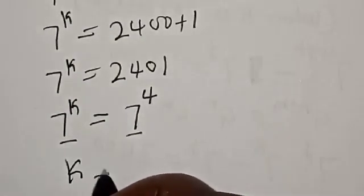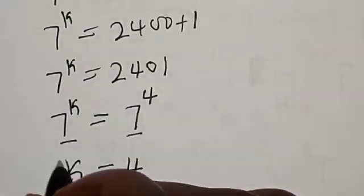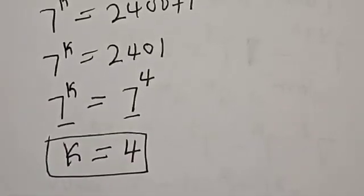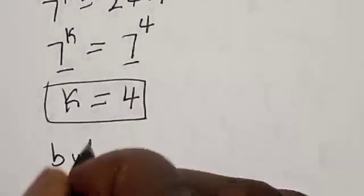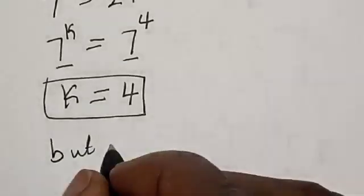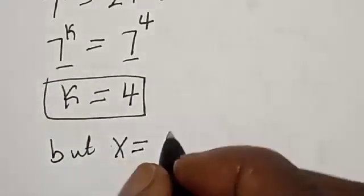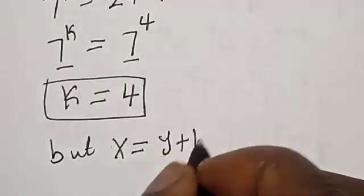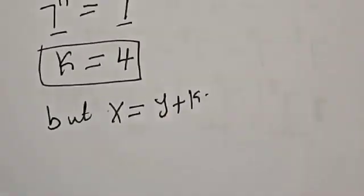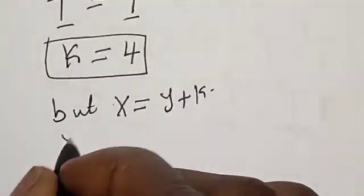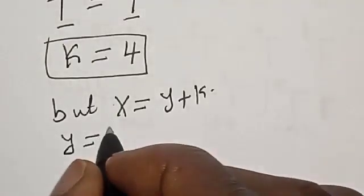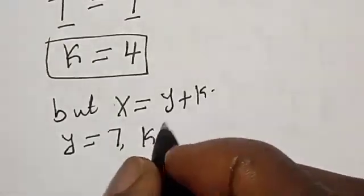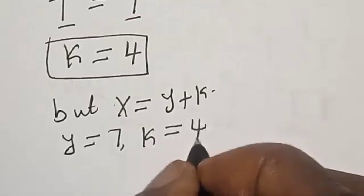By comparing both sides, k is equal to 4 — that is the value of k. And s is equal to y plus k, where y is equal to 7 and k is equal to 4.